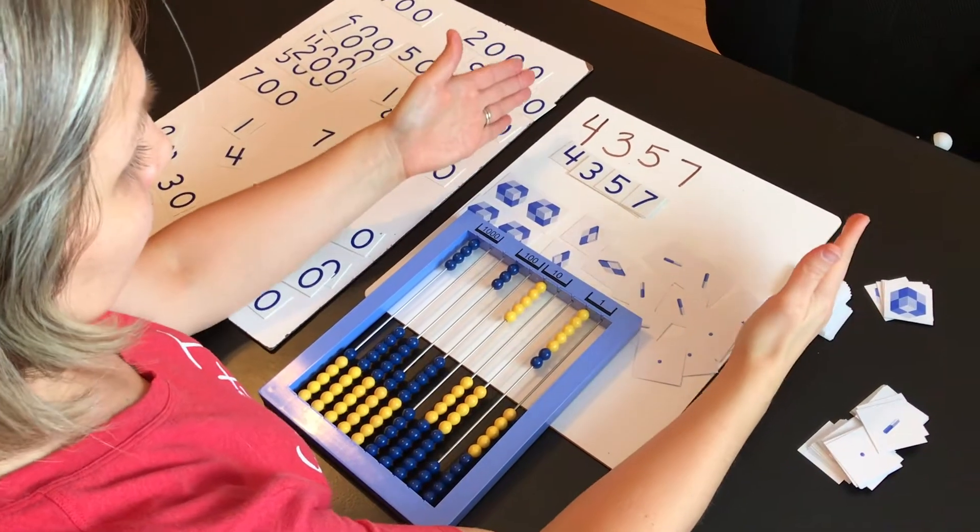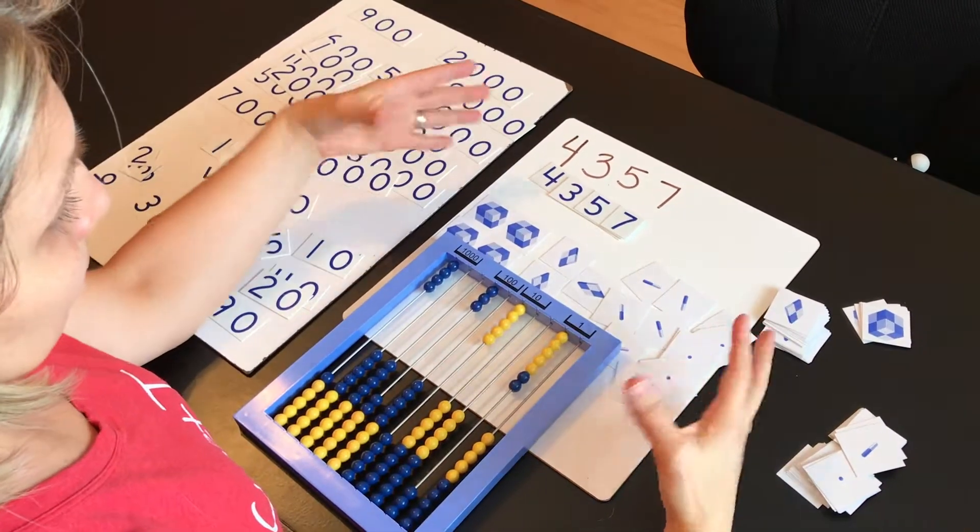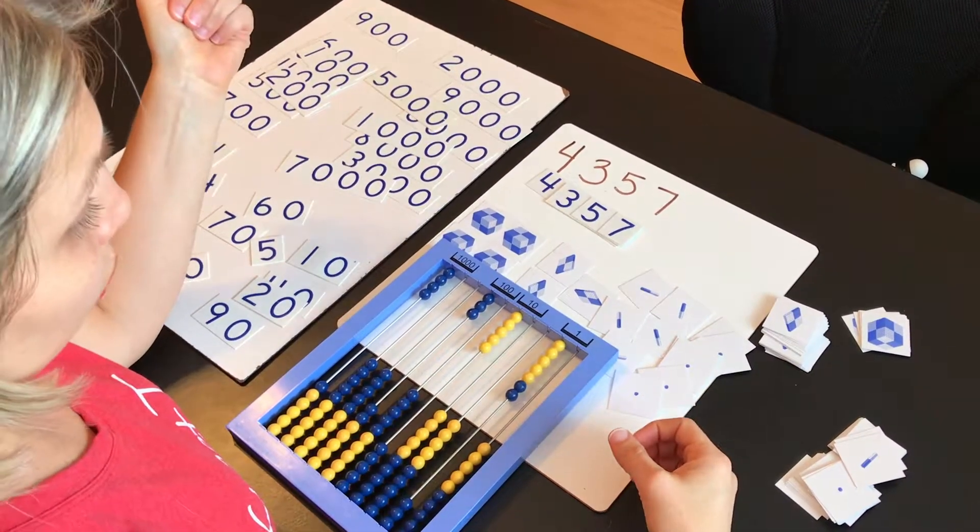So this view gives the child three different ways to conceptualize 4,357.